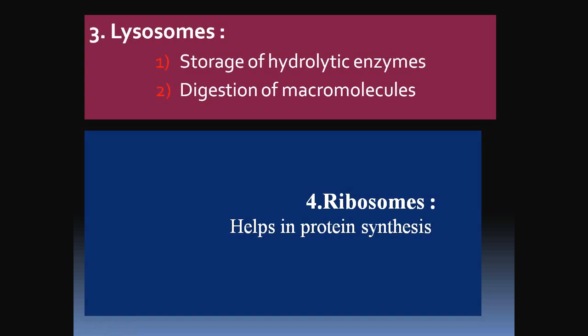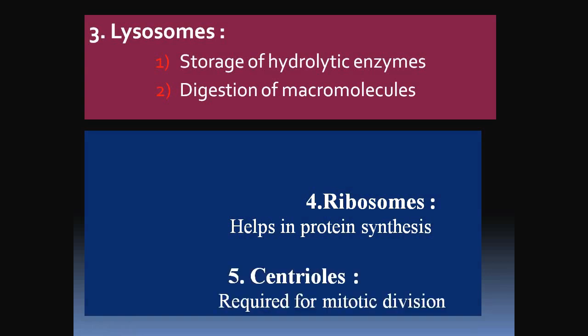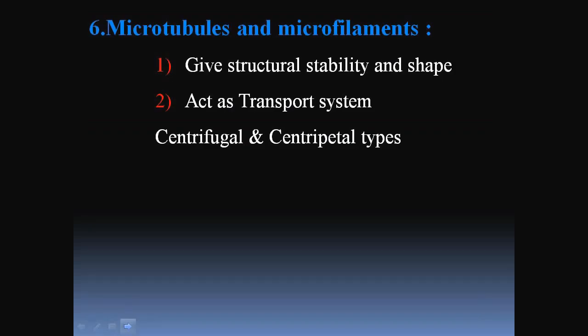Other important organelles include lysosomes, whose main function is storage of hydrolytic enzymes and digestion of macromolecules. Ribosomes help in protein synthesis. Centrioles are required for mitotic division. Microtubules and microfilaments give structural stability and shape to the cell and also act as a transport system. These are of two types: centrifugal and centripetal.